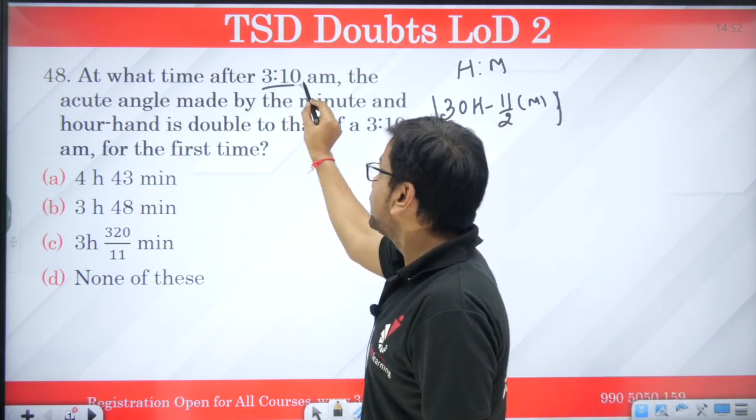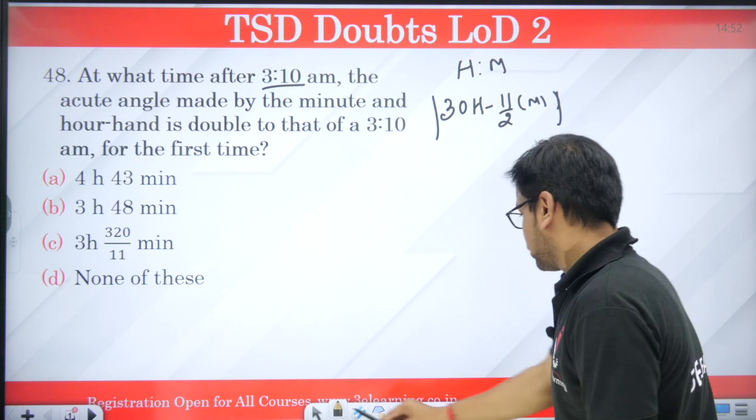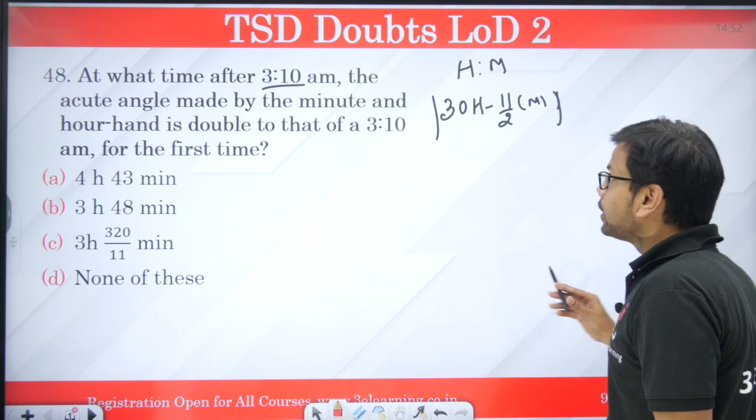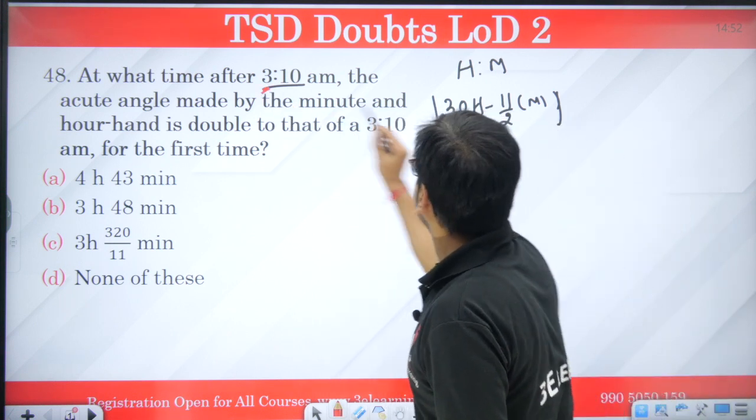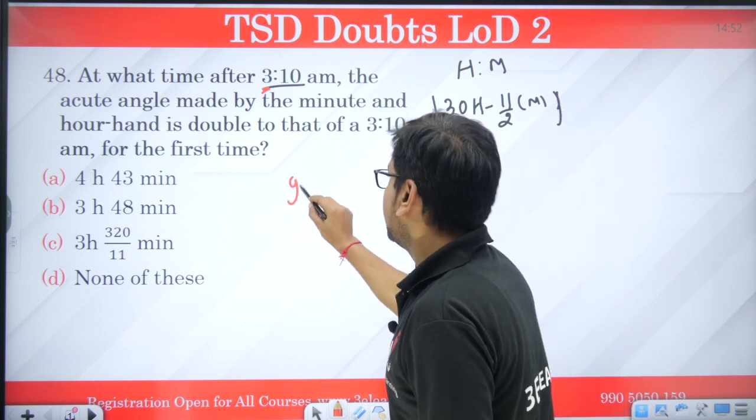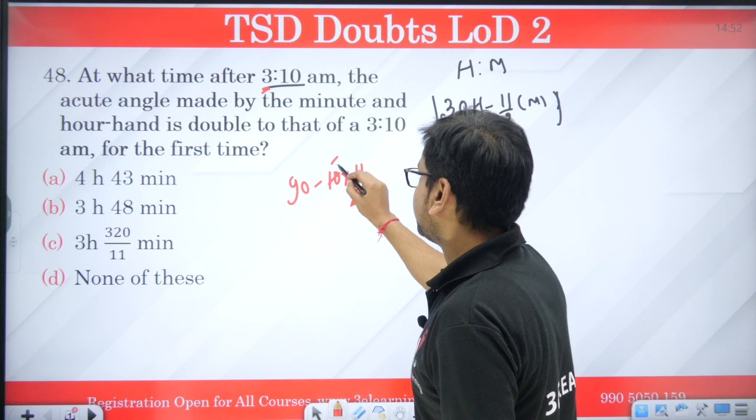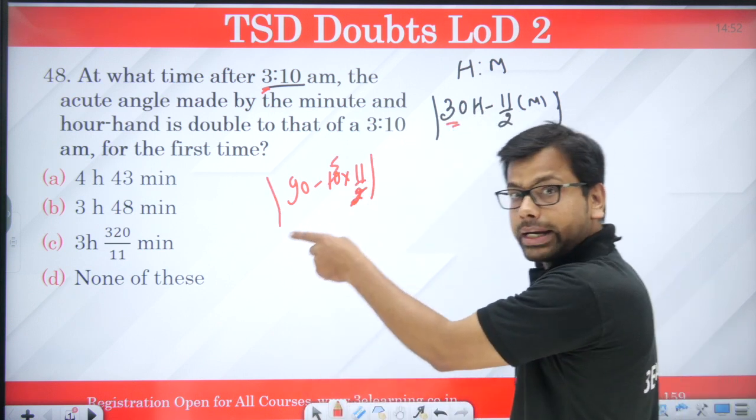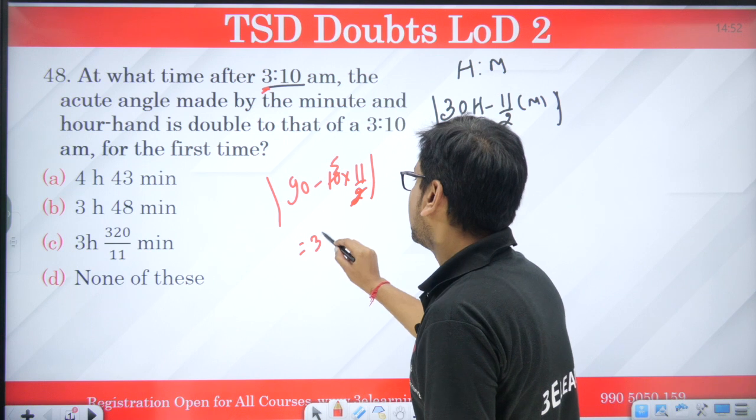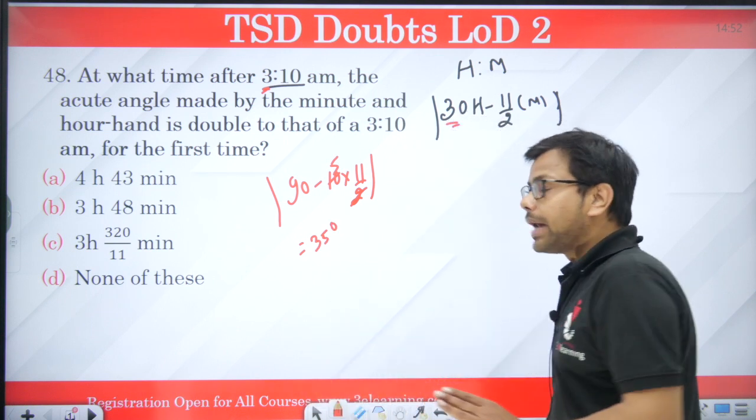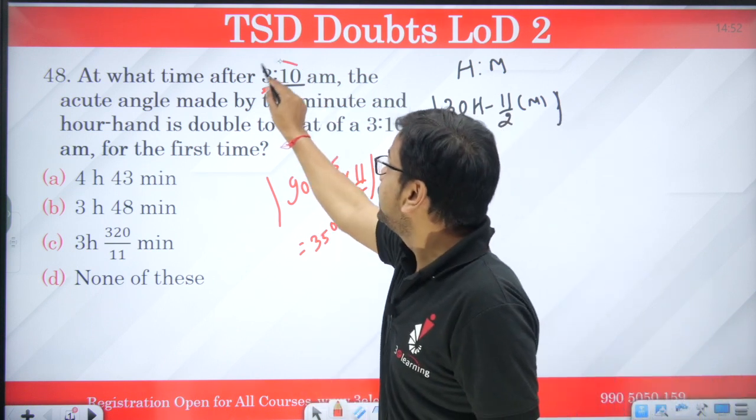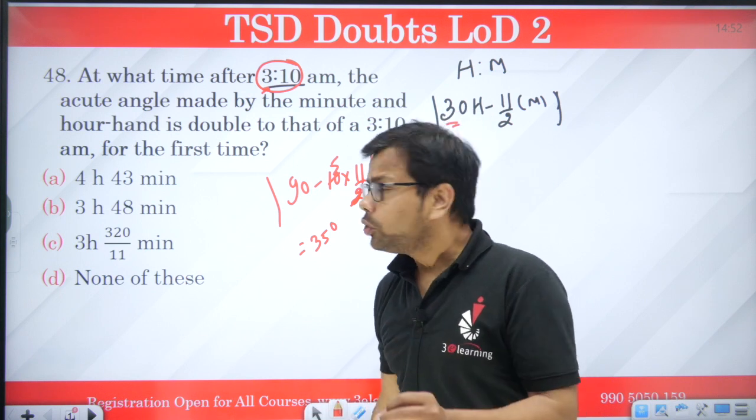So what would be the angle at 3:10? Let's solve this question. h=3, m=10. So 3 multiplied by 30 is 90, minus 10 into 11 by 2, that is 5, so this is 55. 90 minus 55 is actually 35 degrees. So this was the acute angle of 35 degrees at 3:10.